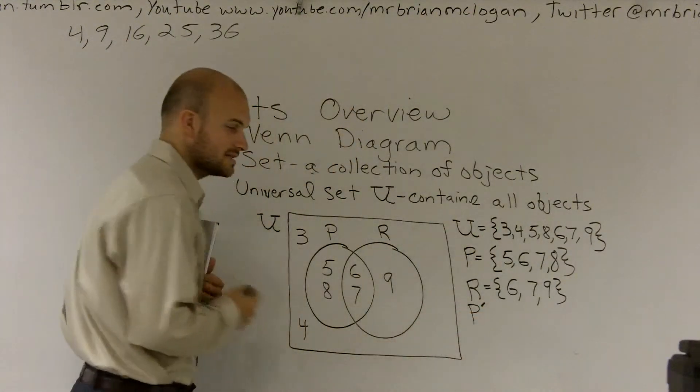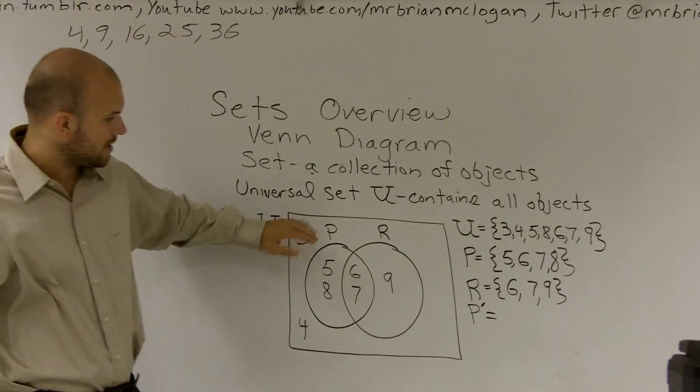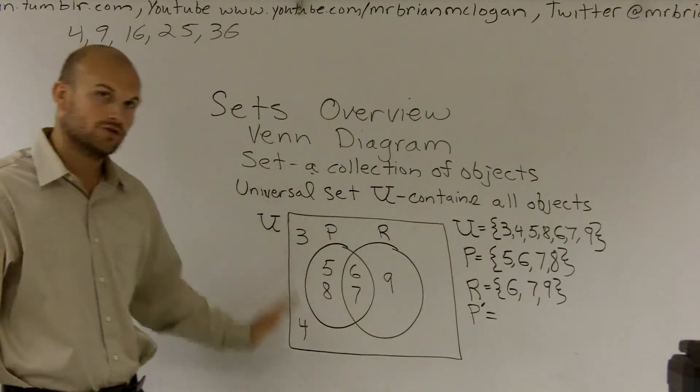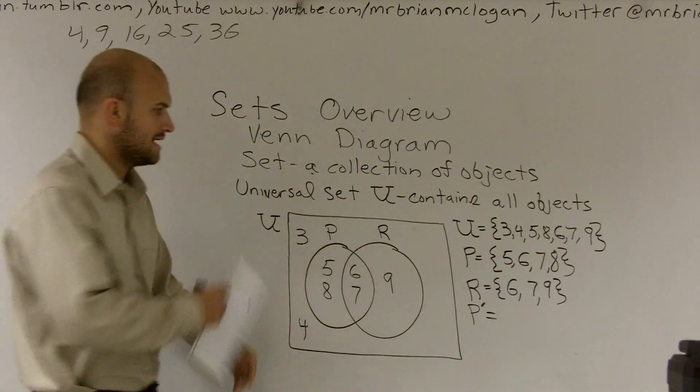when I look at P prime, I see what is everything that's not in my set P but that is in my universal set. So what I notice is everything that's not in this set is three, four, and nine.